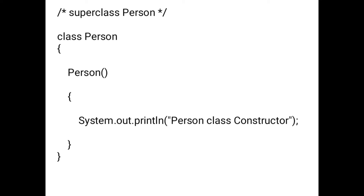Example. Here I am writing a superclass program. The class name is Person. Inside the class I write one method that is also named Person — this is a constructor type method. In the method body I am writing only one output statement that prints 'person class constructor'.